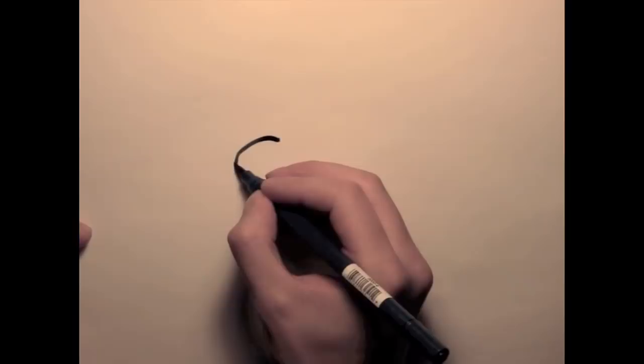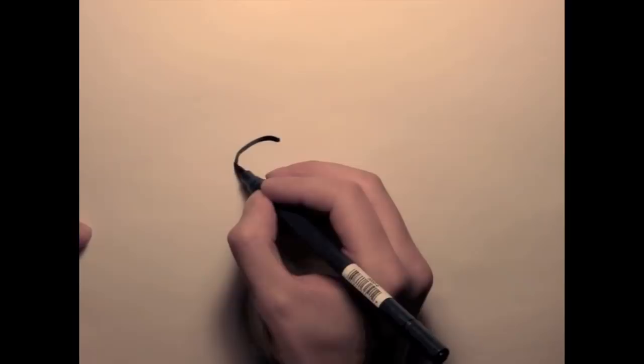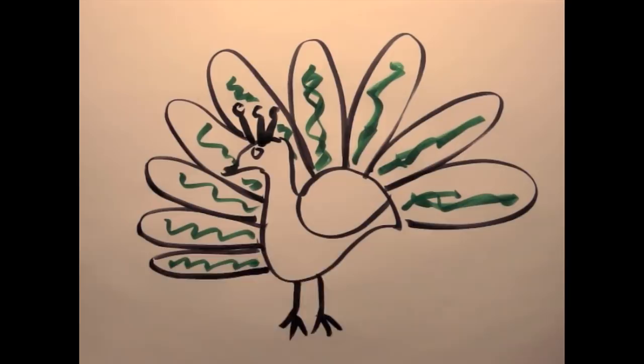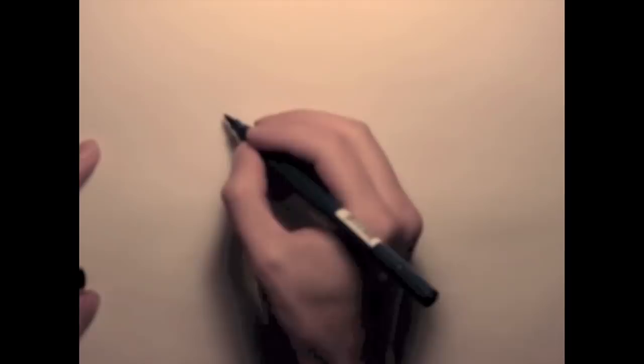Although predation can be a drive for selection, as we saw in the mouse example, it is not the only cause. As you may know, the male peacock has a very large embellished tail with no apparent use in its daily life. Why is this? Well, the peacock lady you see on the left tends to be very, very picky about the gentleman she decides to mate with.